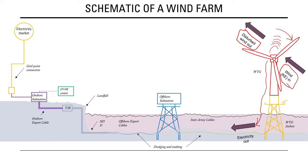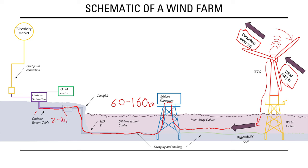For an offshore wind farm, electricity flows through the inter-array cables into the offshore substation, where it generally gets transformed to either high voltage DC or high voltage AC. It then flows down the export cable — possibly 60 to 160 km or more on modern farms — through the transition joint bay where the offshore cable joins the onshore cable, then through the onshore substation where it transfers to grid voltage and off to the electricity market. After all, making a nice hot cup of tea is the most important thing about living in a developed civilization.